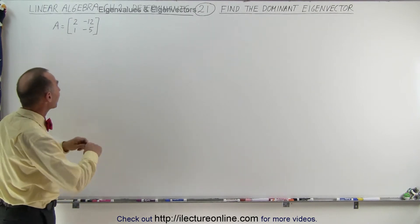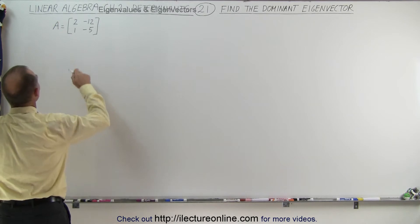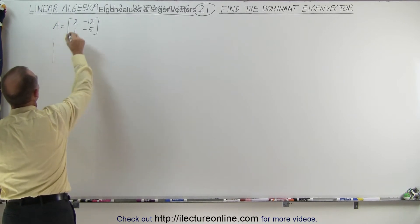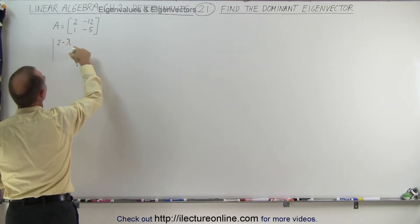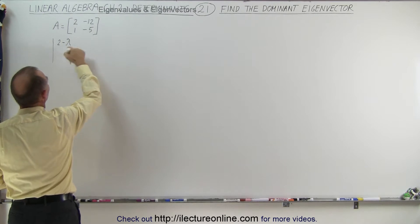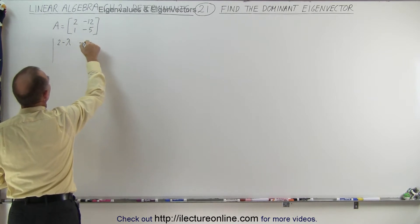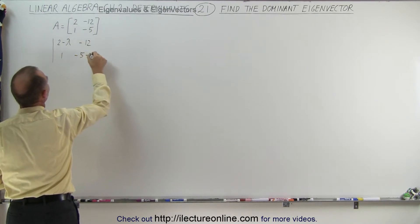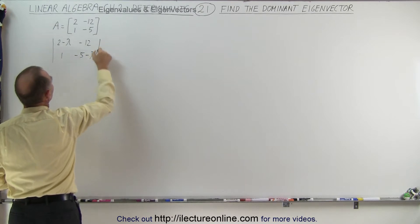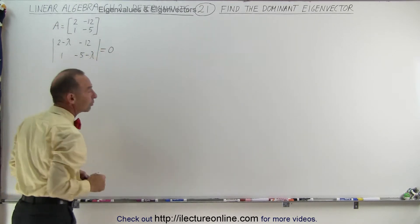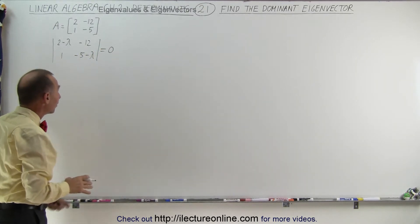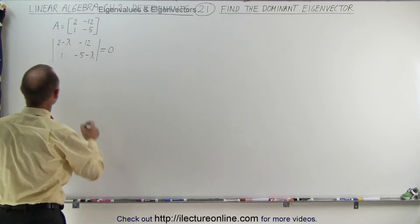First let's find the eigenvalues. We can do that by taking the determinant. We have (2 minus lambda) along the diagonal, minus 12, 1, and (minus 5 minus lambda), and we set this determinant equal to 0 to find the two eigenvalues.